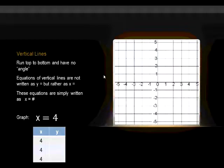Vertical lines run top to bottom, that's up and down. And once again, they have no angle, no slope. Vertical lines are not written as y equals, but rather they're written as x equals. These equations are simply written as x equals some number. There's no y variable present.